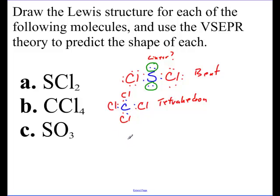Last but not least, SO3. S in the middle, double bond O, O, and O. What's this going to be? Trigonal planar. Notice this is not sulfite. If it was, it would be a little different.